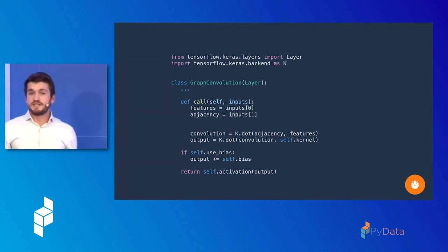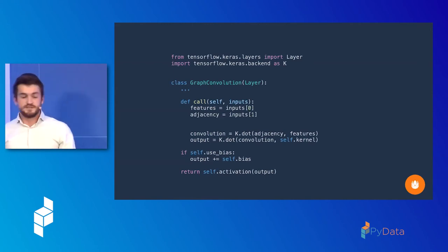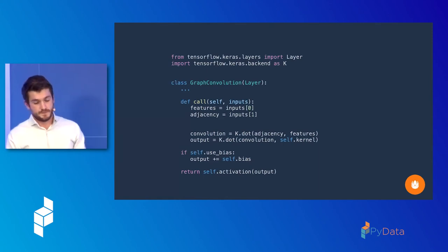And so you can make this layer yourself in Keras. It's very easy. The only thing you need to remember is to pass both the adjacency matrix and the node feature matrix as tensors at the same time as you're creating the layers. And after that, it's just two dot products that you have to calculate.